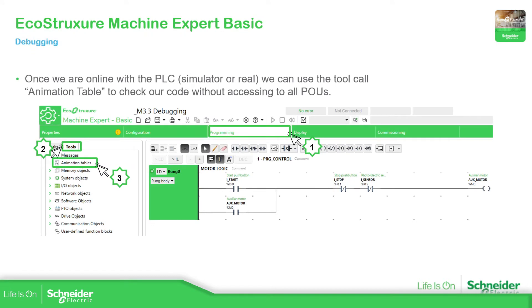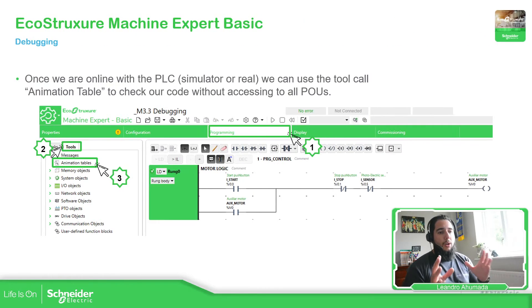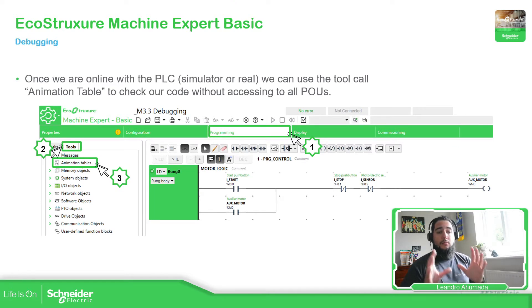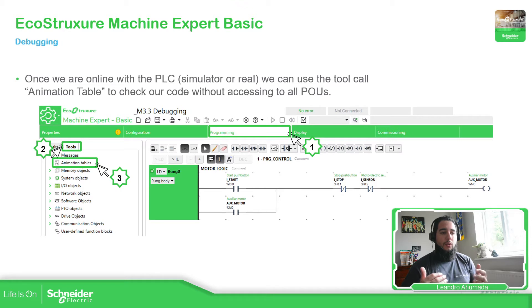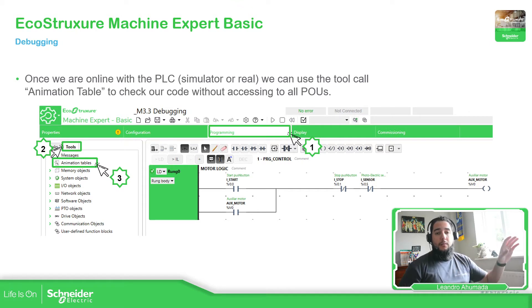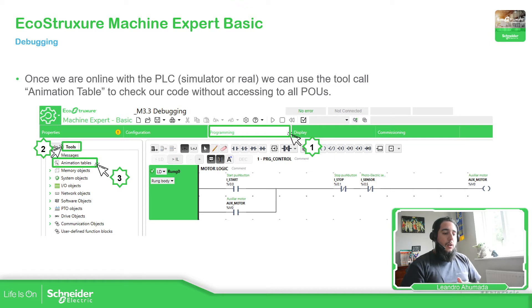What we're going to see in this presentation is what we call the animation table. In this animation table we can create a table where we can define all the variables that we want to see. So instead of using the ladder view of the code — where the program is probably divided in different POUs or different parts of the same ladder — we can use this table to see all the variables we want in one place. That's the advantage.